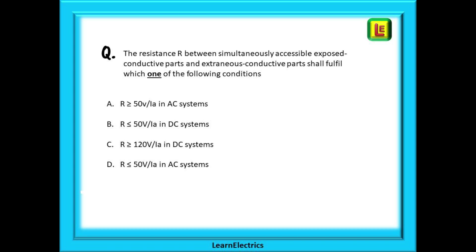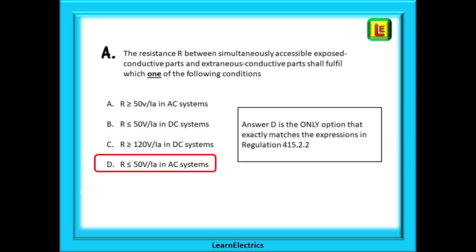The resistance R between simultaneously accessible exposed conductive parts and extraneous conductive parts shall fulfill which one of the following conditions. There will only be one answer that fits the question. Here we just need to look at the equations in the regs book and carefully compare them with the possible answer choices. Only one will exactly match. And we find the answers to be choice D. This is the only exact match. So easy but read carefully. Double check, treble check if you need to.